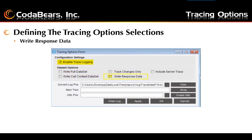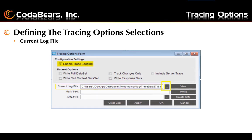The next box to focus on is write response data. You would want to check this checkbox to capture the dataset replies. Often there can be method calls that are called and change data but are not written to the database and instead just returned to the client. This option is useful when developing for Service Connect workflows or C Sharp customizations when you need to see the before and after dataset.